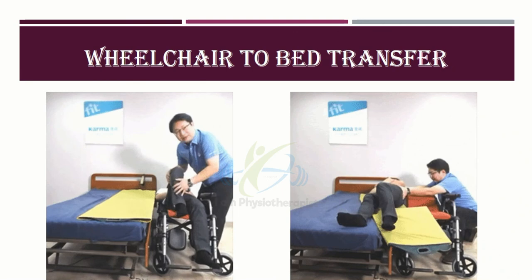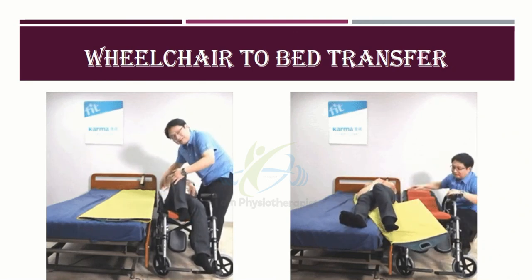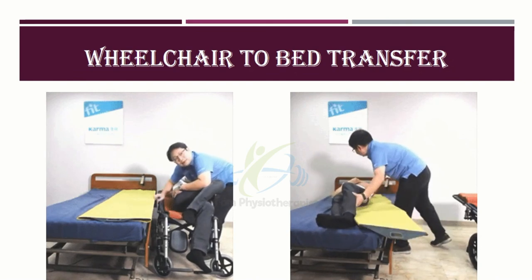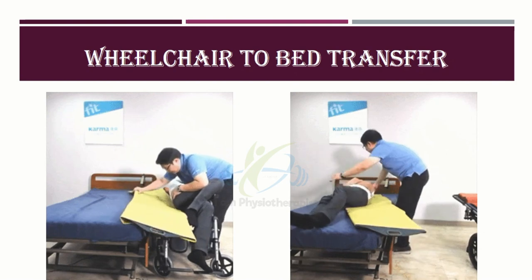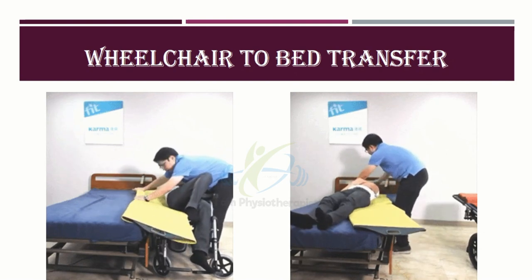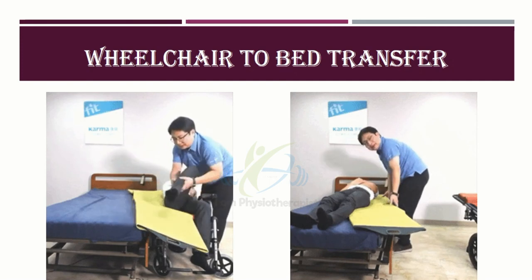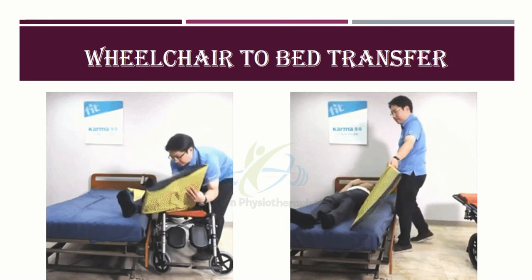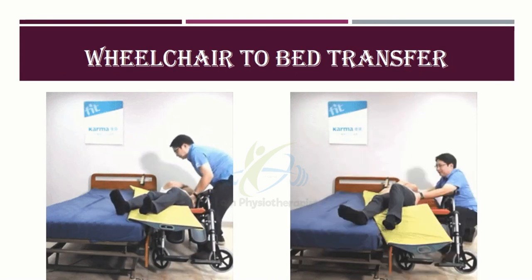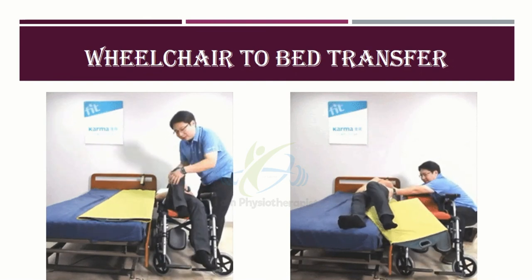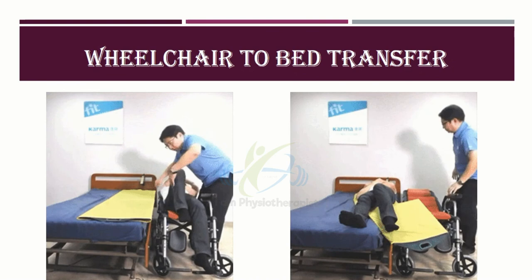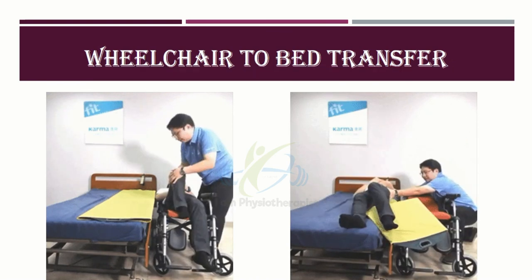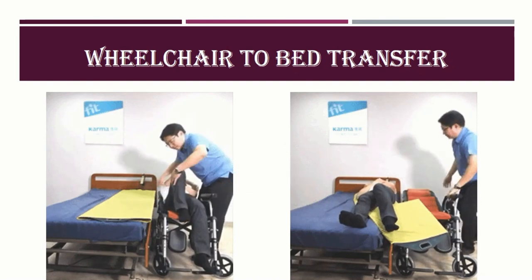Wheelchair to bed transfer: recline the wheelchair into the lying down position with the armrest removed on the side next to the bed, and lay the shifting mat out on the bed. Lift the leg of the elderly user closest to the bed. The caregiver should roll the user towards themselves and slide the mat under the elderly. Lifting the elderly's legs onto the bed first will make it easier to shift the rest of their body onto the bed. Move the wheelchair away from the bed. Position the elderly in the middle of the bed and carefully remove the shifting mat from under them.